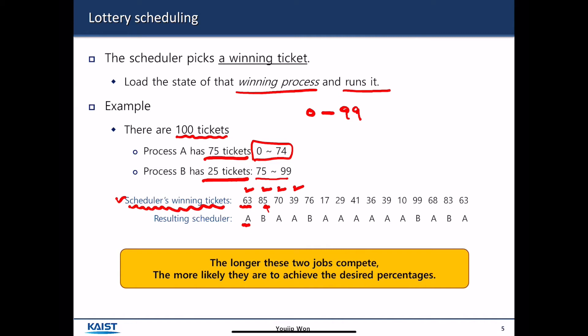As CPU keeps generating random numbers and picks them up, the random number tends to converge to the predefined CPU scheduling probability. So, the longer amount of time these two jobs compete with each other, the CPU scheduler is more likely to converge to the probability that has been defined by the number of tickets.